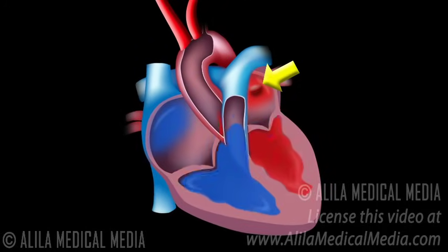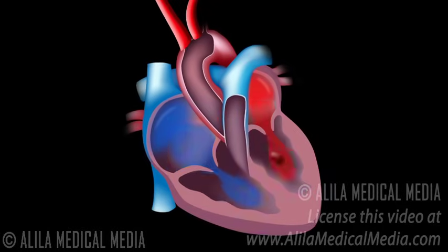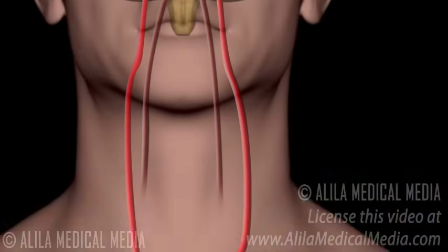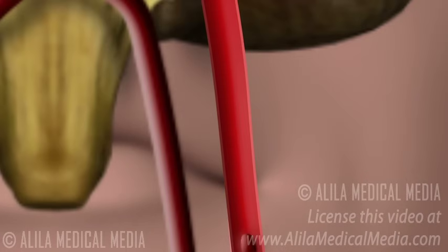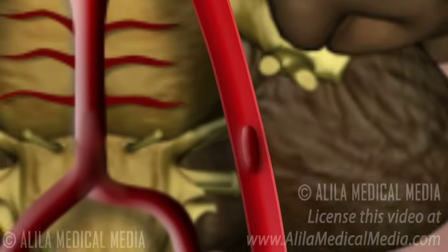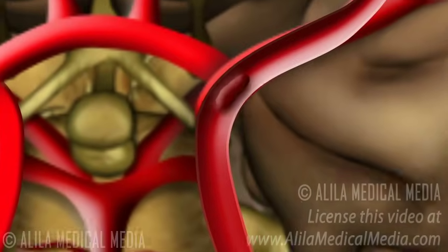These clots may then pass into the bloodstream, get stuck in small arteries and block them. When a blood clot blocks an artery in the brain, a stroke may result.